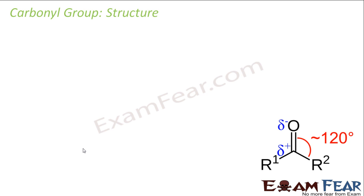This is the typical structure of the carbonyl group. I have this carbon here, and I have two alkyl or aryl groups attached, or hydrogen also. And this is oxygen here. Oxygen is more electronegative than carbon, so oxygen will try to attract electrons towards itself. Electron will slightly move towards oxygen, so oxygen will develop a slightly negative charge and carbon will develop a slightly positive charge. And the angle between them is 120 degrees. That is the structure.